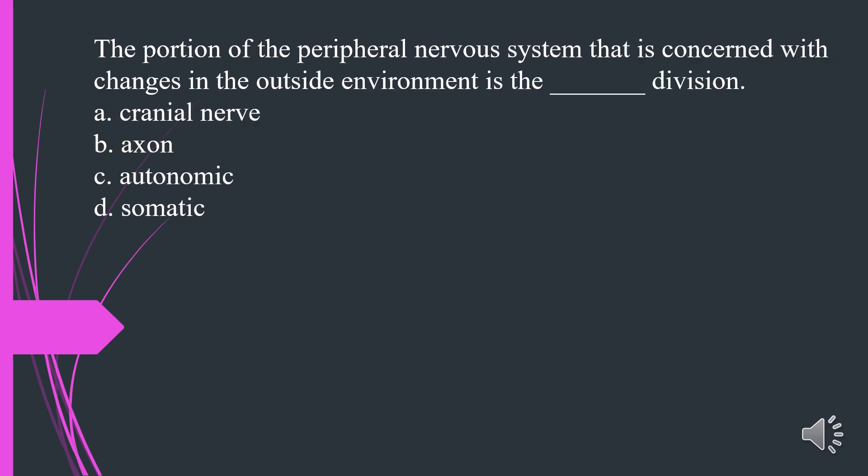The portion of the peripheral nervous system concerned with changes in the outside environment is the what division? A. Cranial nerve. B. Axon. C. Autonomic. D. Somatic. The answer is D. Somatic.